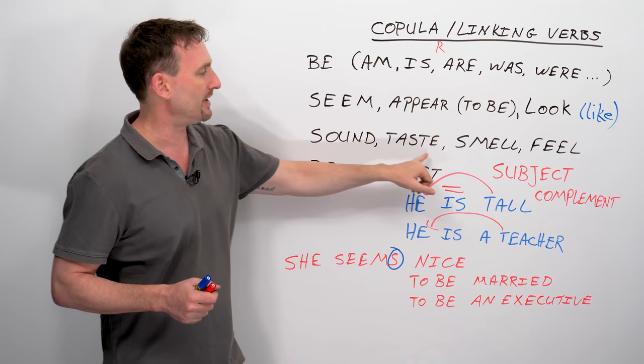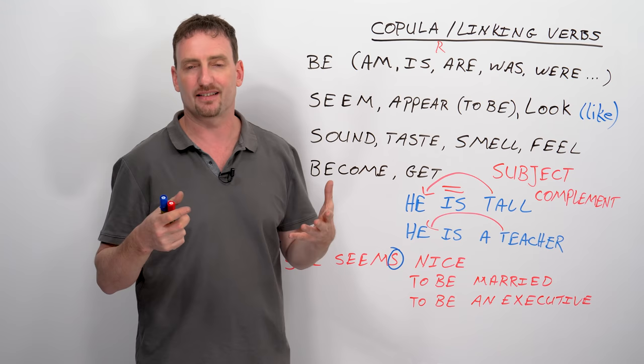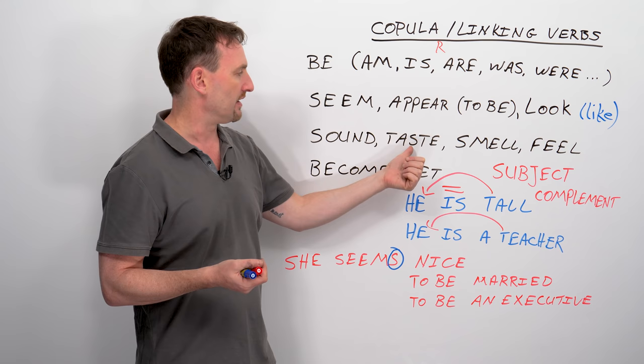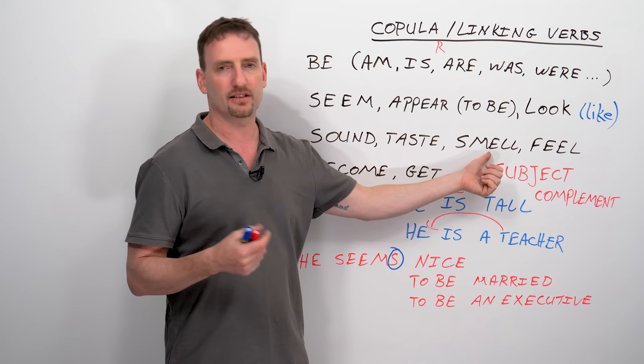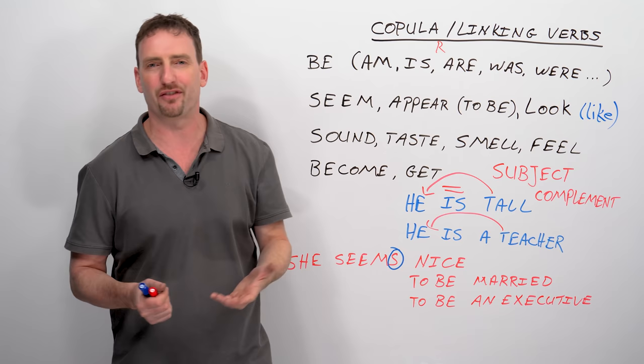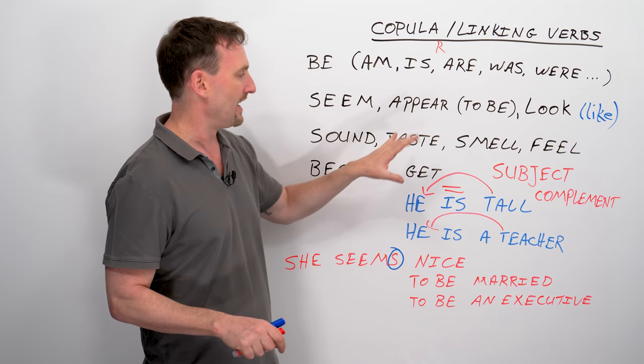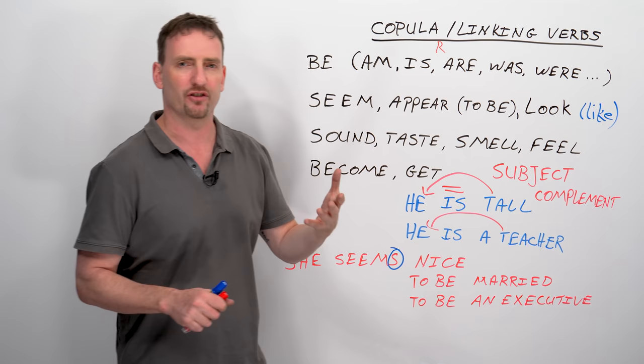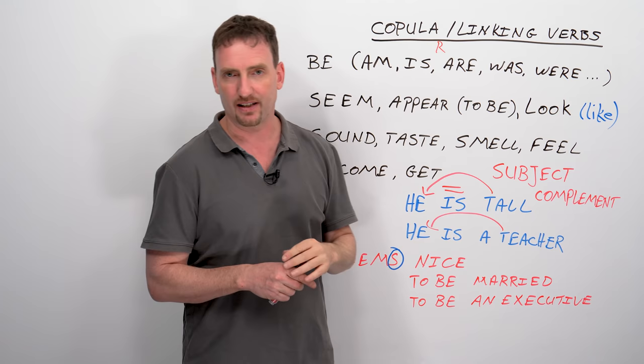Now sound, taste, smell, and feel. You're going to describe how certain things affect the senses. So the song sounds nice. The food tastes delicious. Notice the S. The flower smells lovely. The cat's tongue feels rough when it licks me. So I'm describing a sense. Now keep in mind that these are also stative verbs. And if you're not sure what a stative verb is, Rebecca, who's another teacher here at engVid, has made a lesson about that. You can look for the link somewhere here to learn more about state verbs. These are part of the state verbs.